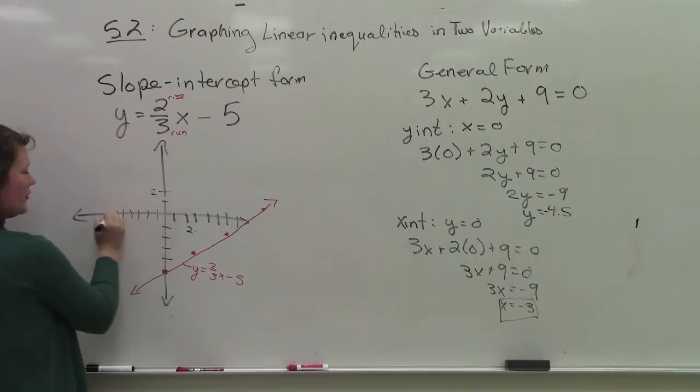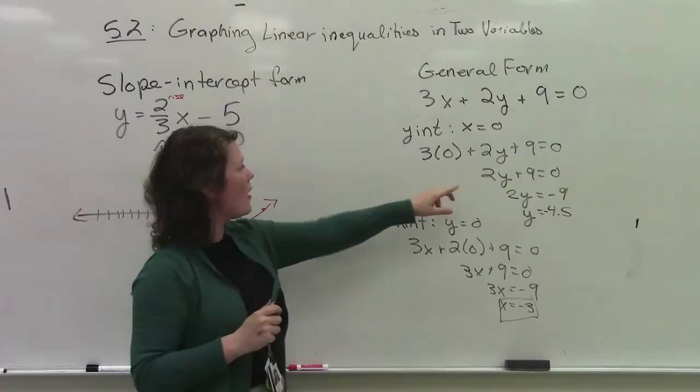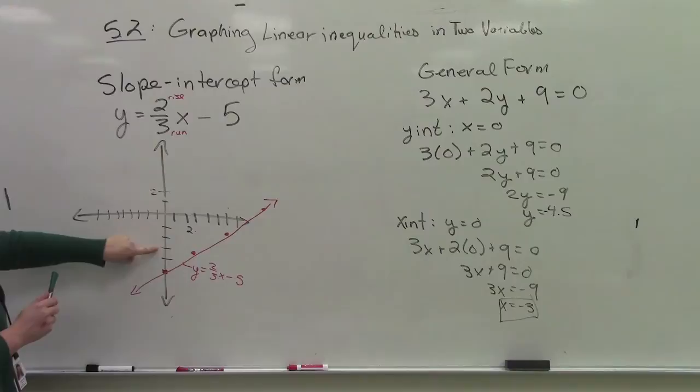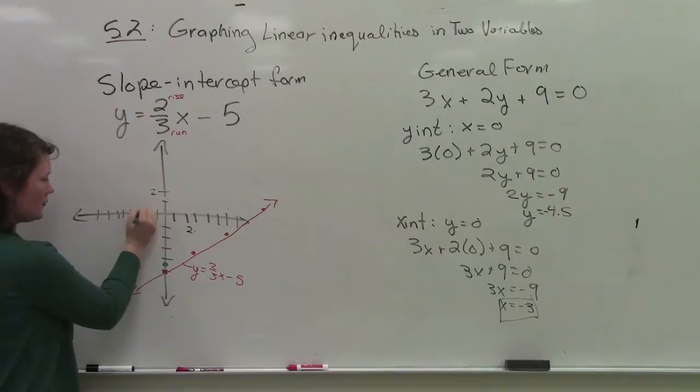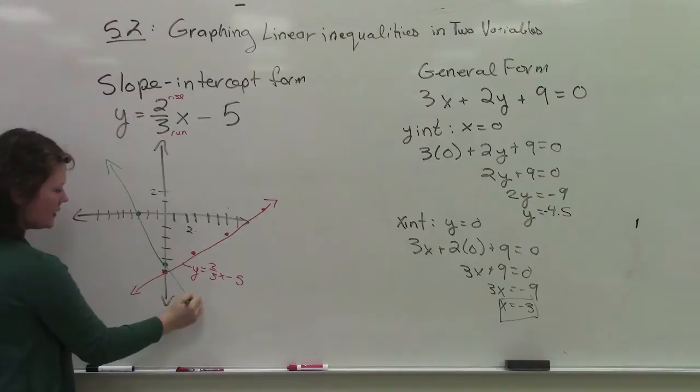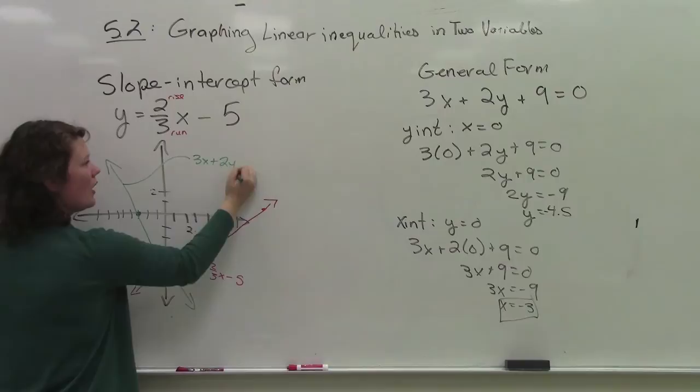So I'm going to say my y intercept is at negative 4.5. 1, 2, 3, 4.5. And my x intercept is at negative 3. 1, 2, 3. So then I would just connect those two lines like that. Make sure it extends forever. And I'm going to label it 3x plus 2y plus 9 equals 0. Done.